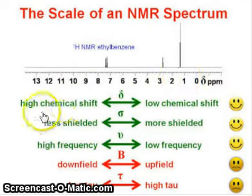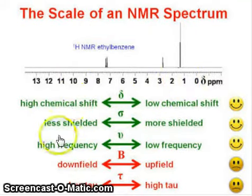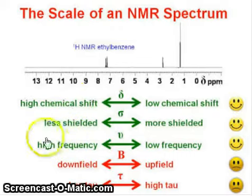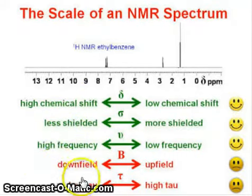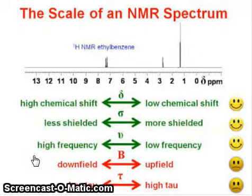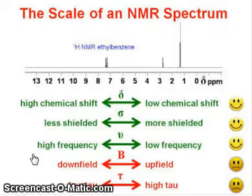So just remember: one side has high chemical shift, less shielded, high frequency, downfield, and low tau. Hope friends, this video will be helpful to you. If you like this video then subscribe to my channel, and thanks for watching.